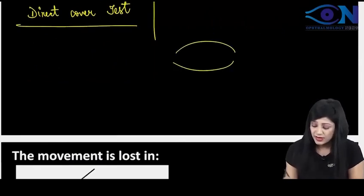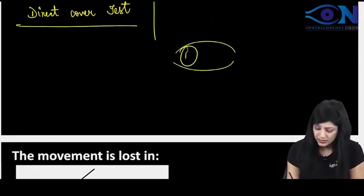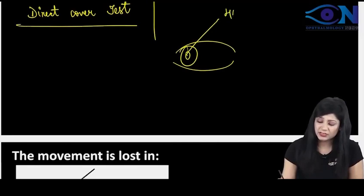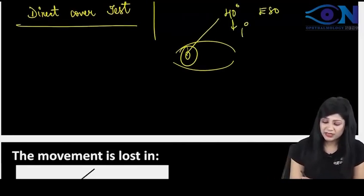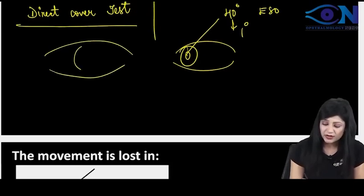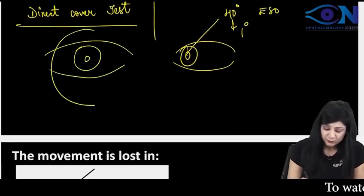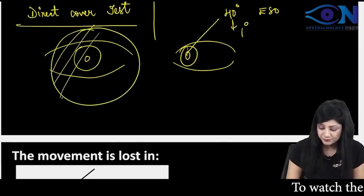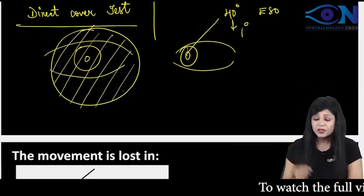Let us see how. Suppose this is the primary deviation. We can see the squint and we can see the 40 degree esotropia. So 40 degrees will be the primary deviation and then this is the normal eye. I want to see the deviation here. So I am putting it under the cover and we have covered this eye.